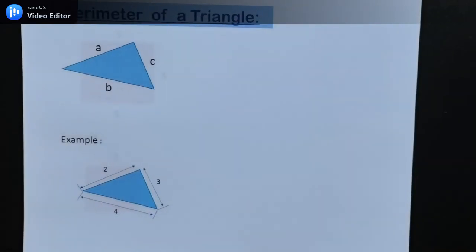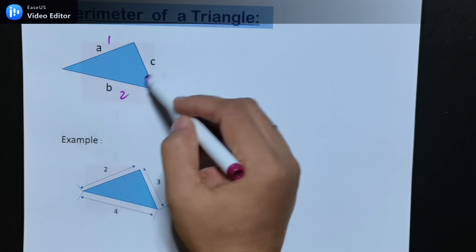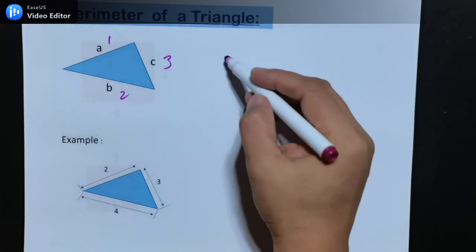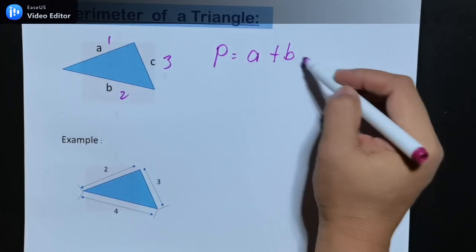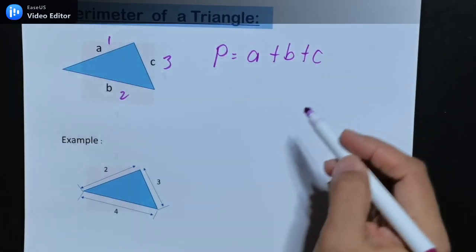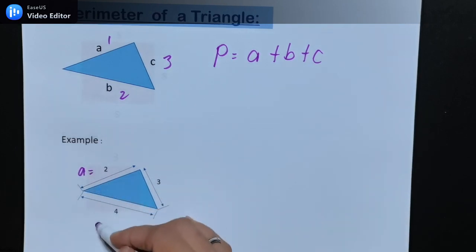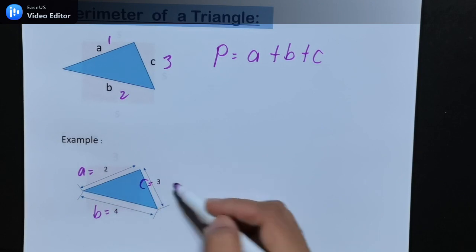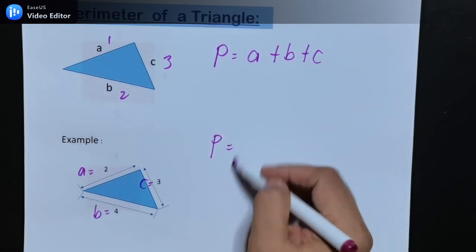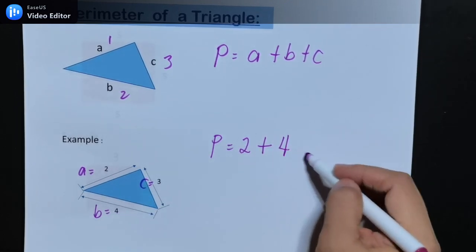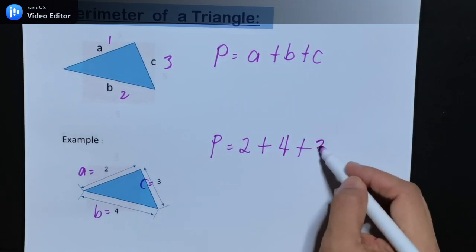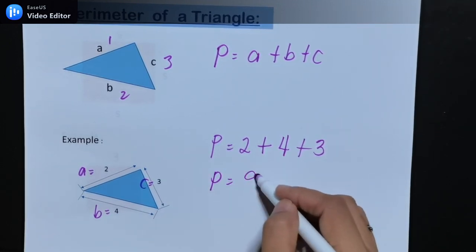Next, perimeter of a triangle. We all know that a triangle has 3 sides. The perimeter of a triangle is adding all sides: A plus B plus C. From this example, we have A = 2, B = 4, and C = 3. So the perimeter is 9.